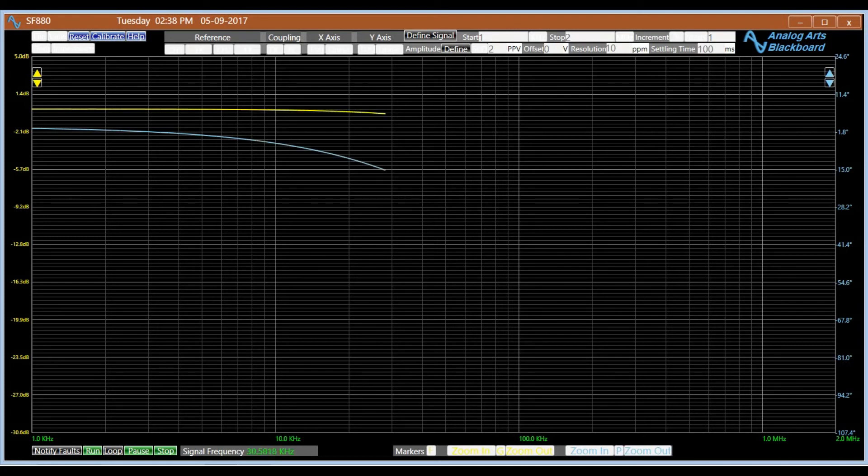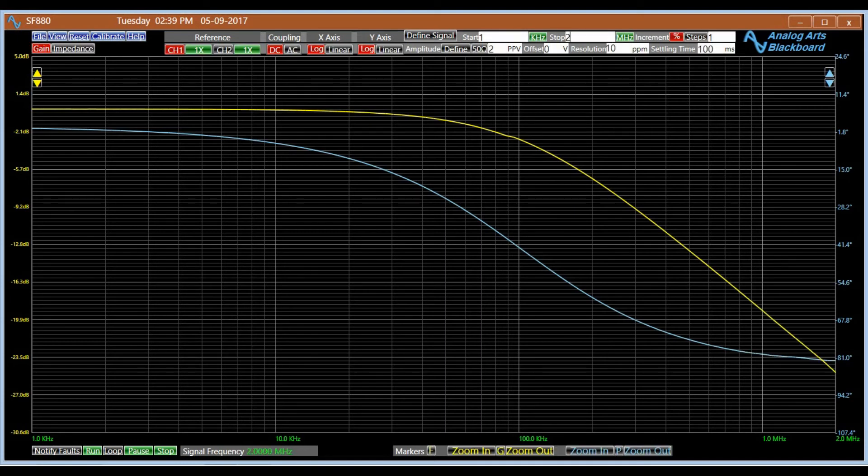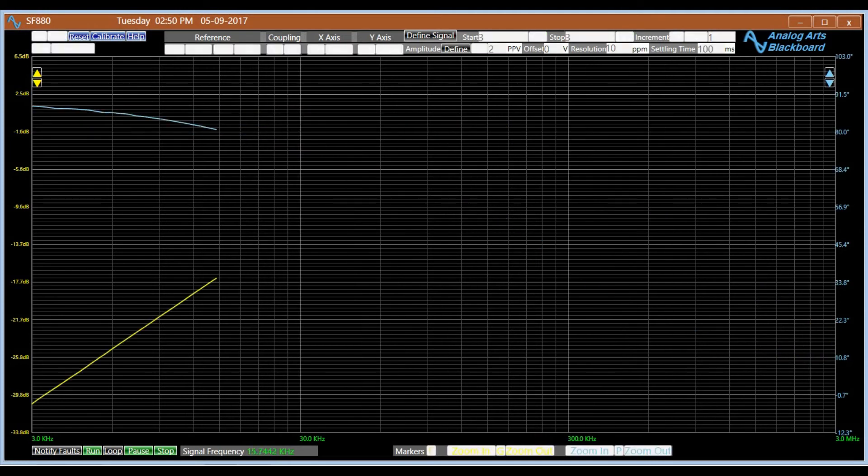A sweep frequency response analyzer can be used to verify the behavior of the RC circuit. In this plot, the yellow line represents the amplitude and the blue line shows the phase response of the circuit. The plot for an RL circuit also verifies the fact that the impedance of an inductor increases with frequency.